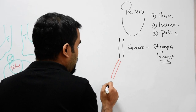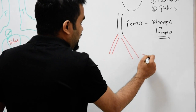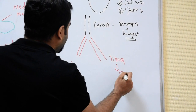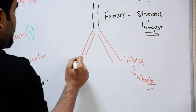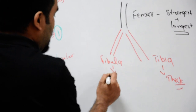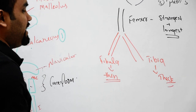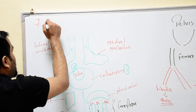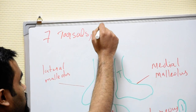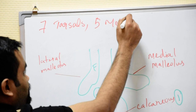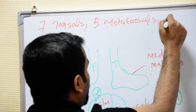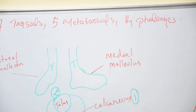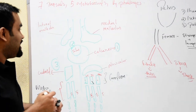After the femur, on the medial side we have the tibia, which is the thicker one, and on the lateral side we have the fibula, which is the thin one. After that, like in the upper limb, we have seven tarsals, five metatarsals, and fourteen phalanges.